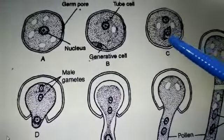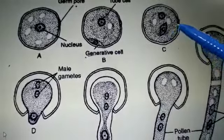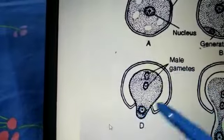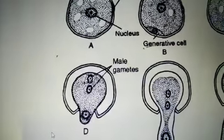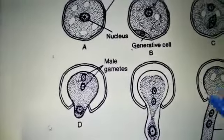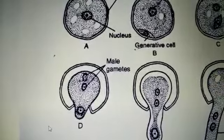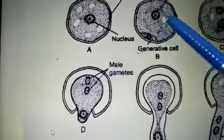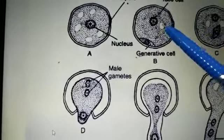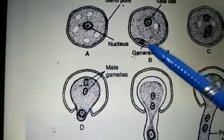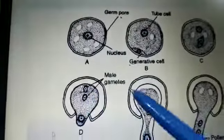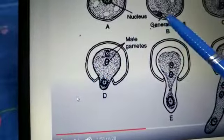The generative nucleus then divides to form two male gametes. The pollen grain is shed sometimes in a two-cell stage or sometimes in a three-cell stage. In sixty percent of angiosperms, the pollen grains are dispersed for pollination in the two-cell stage.